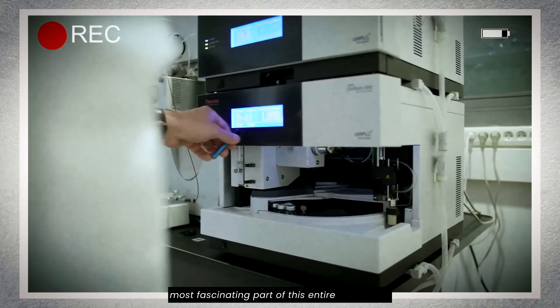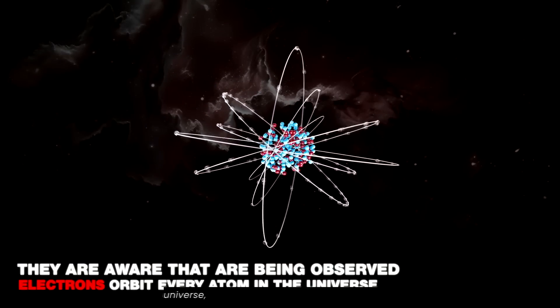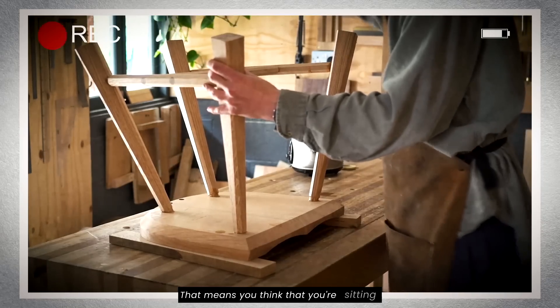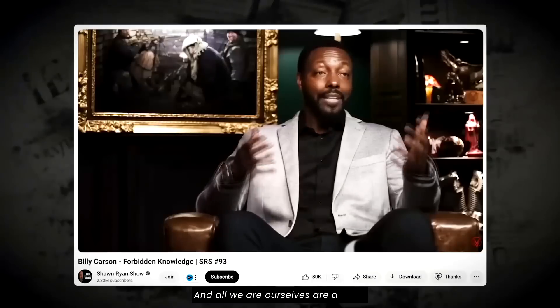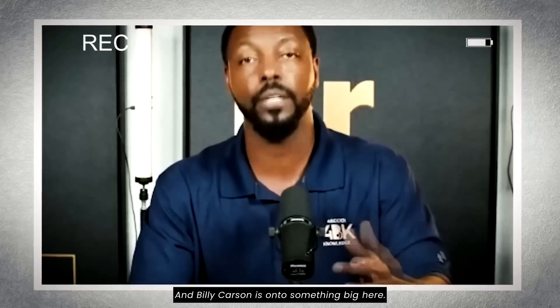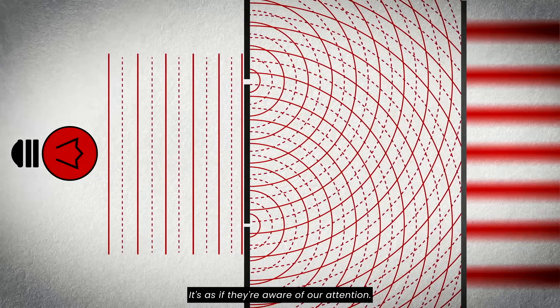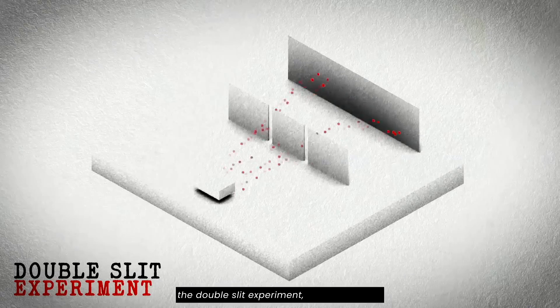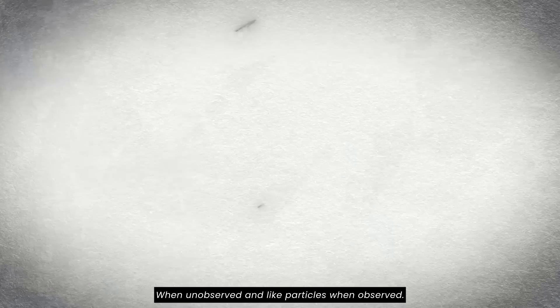What's coming next may just be the most fascinating part of this entire discussion. Billy Carson is on to something big here. Science backs him up too. Quantum mechanics tells us that particles like electrons behave differently when they're being observed. It's as if they're aware of our attention. This phenomenon is famously highlighted in the Double Slit experiment, where electrons change their behavior based on whether they're being watched, acting like waves when unobserved, and like particles when observed. But what holds all of this together?